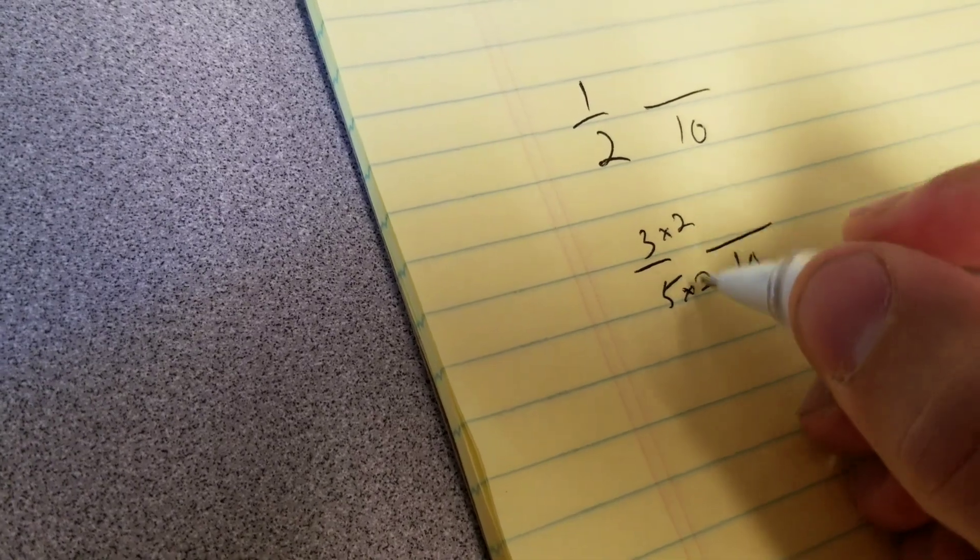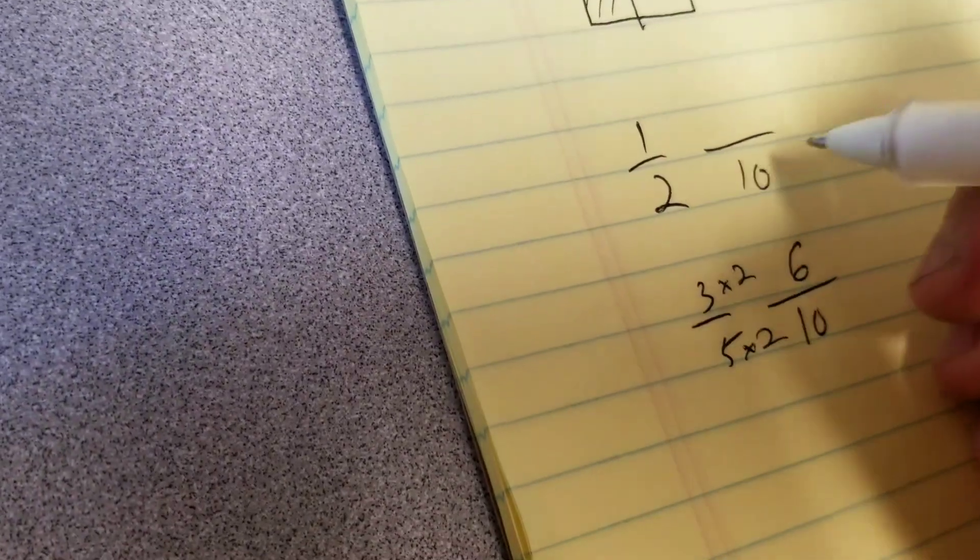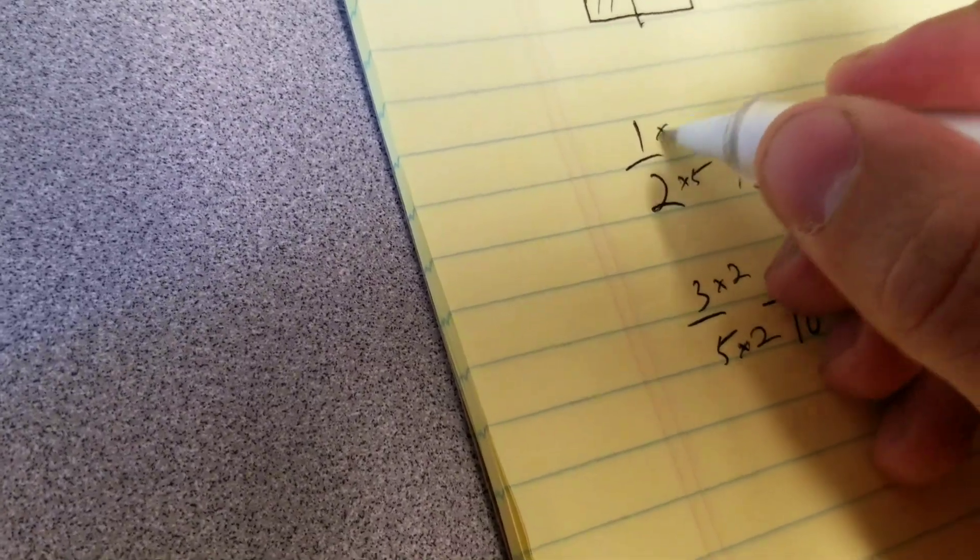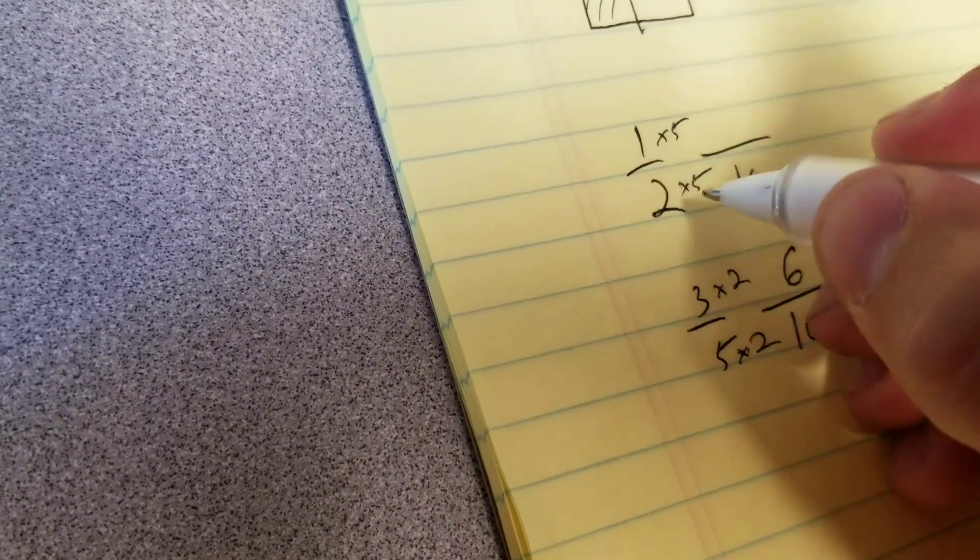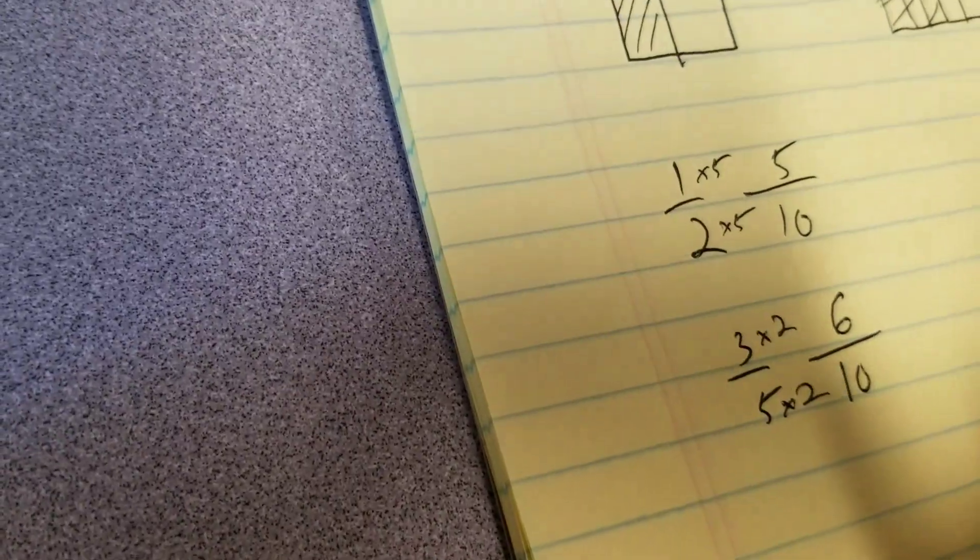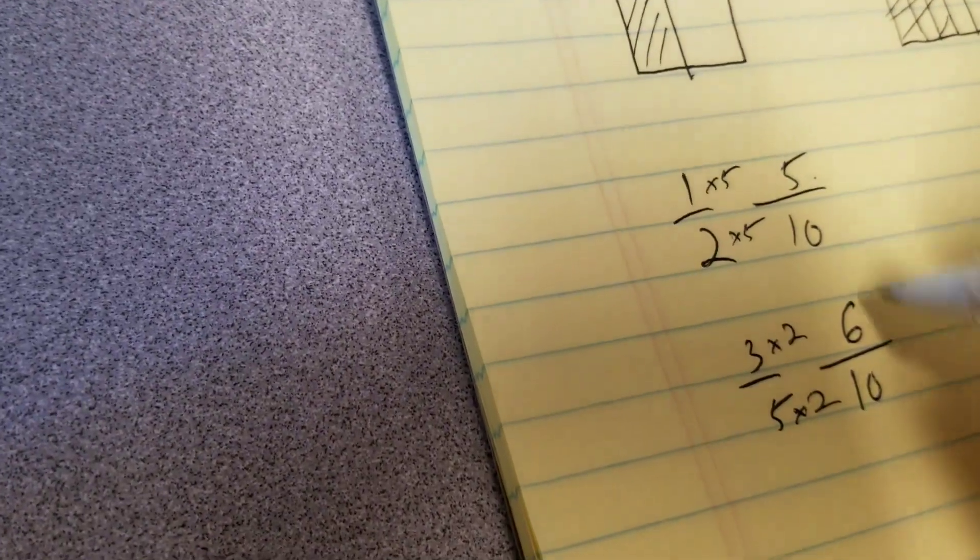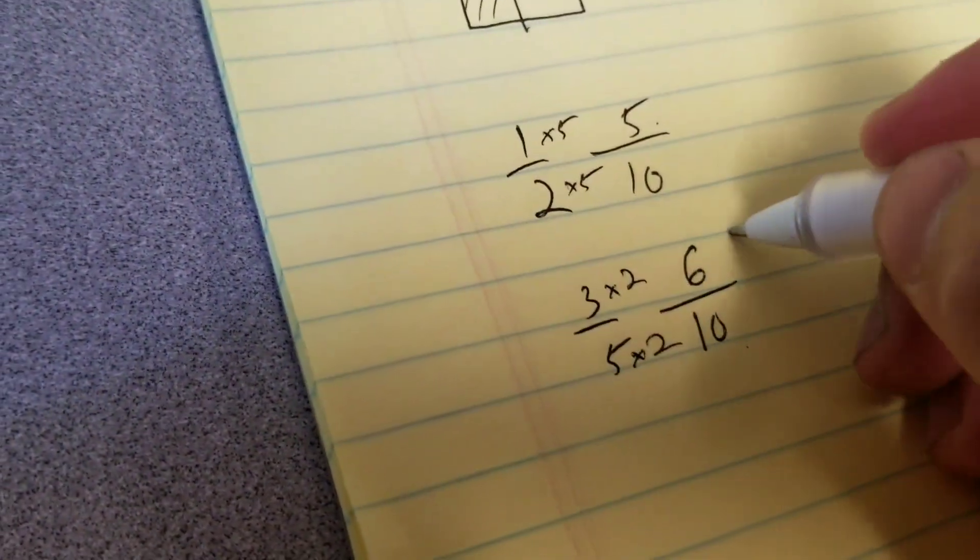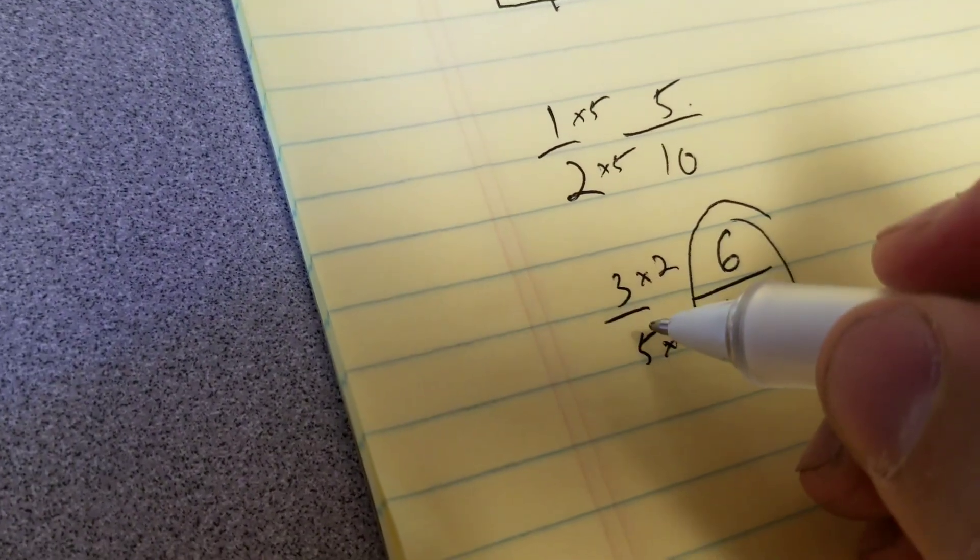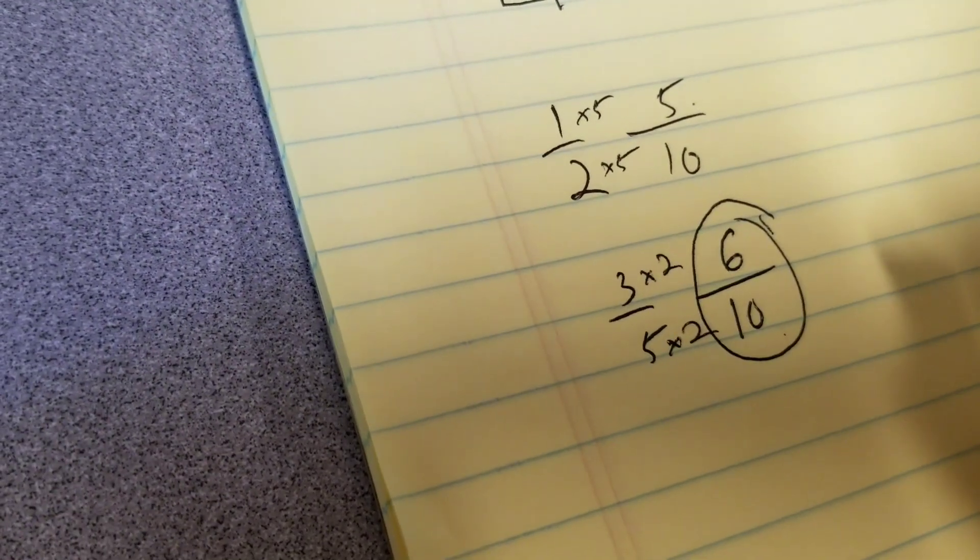And 1/2: 2 goes into 10 five times. Whatever you do to the bottom, you do to the top, so 1/2 now becomes 5/10. So which is bigger, 5/10 or 6/10? We know that 6/10, which was originally 3/5, is our bigger fraction.